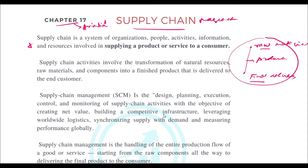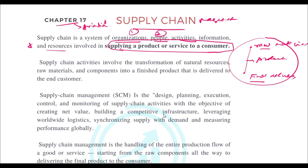A supply chain is a system of organizations, people, activities, information, and resources involved in supplying a product or service to a customer. The end aim is to supply the product or service to a customer. For that, you need contacts with organizations that supply raw materials, a team of people performing activities, and the information and resources to carry out those functions.